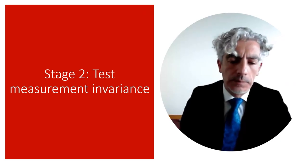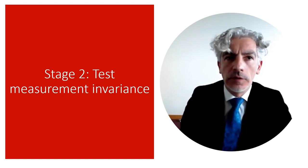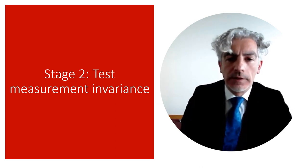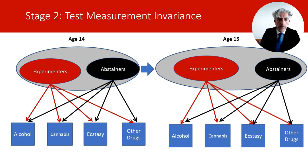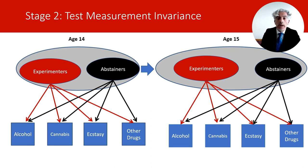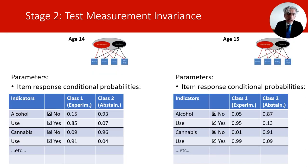When applying measurement models to different time points, we may also consider tests of measurement invariance. In a simplified example, if there are two underlying classes at age 14 and age 15 that appear similar — say, a class of experimenters and a class of abstainers — we can regress the latent classes at age 15 on those at age 14 using multinomial regressions. Since the two classes appear similar, can we plausibly assume they have the same measurement parameters at both time points? The measurement parameters in latent class analysis are the item response conditional probabilities.